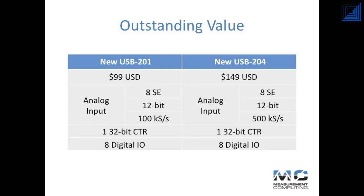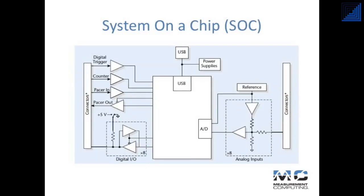No other data acquisition product comes close to matching this performance at these price points. By utilizing this technology in the USB 201 and 204, the MCC engineers were able to dramatically increase acquisition speed while reducing the board cost and maintaining outstanding measurement accuracy.